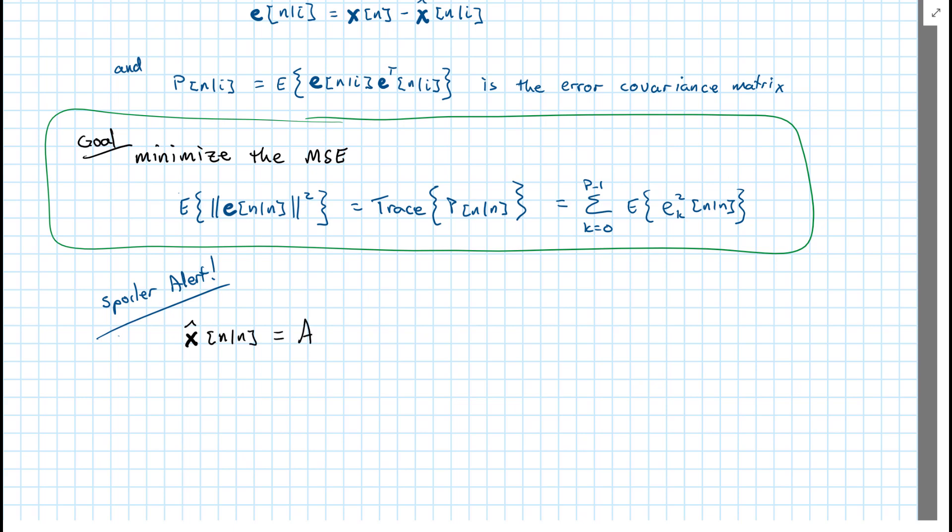So our estimate is equal to A n given n minus 1 times our previous estimate, n minus 1 given n minus 1. So that's our previous estimate of the state up to the last time.